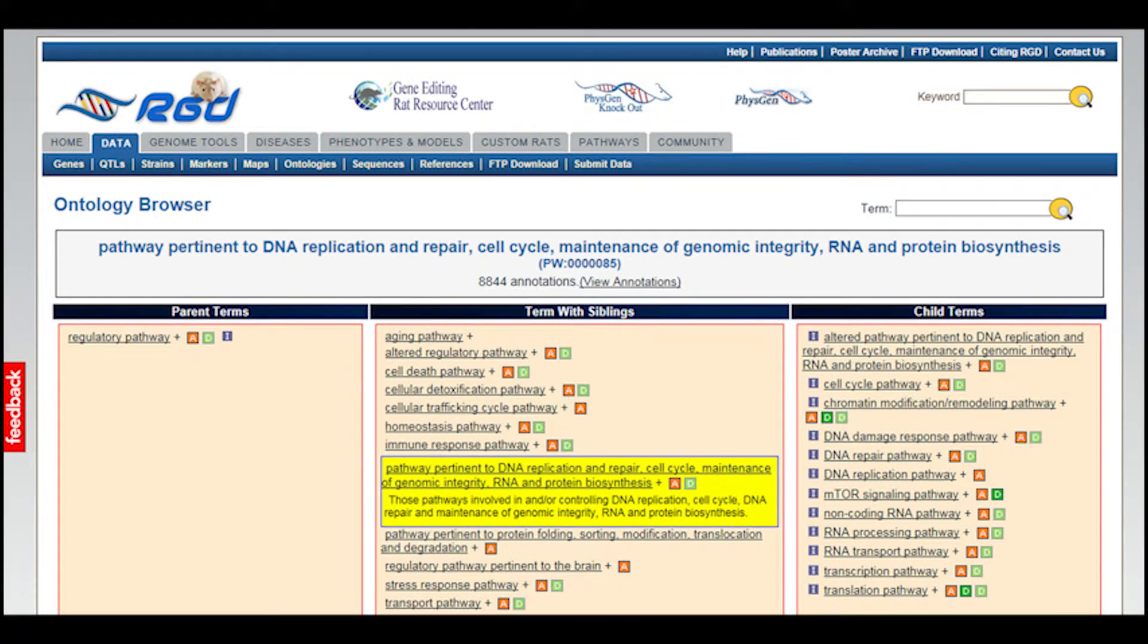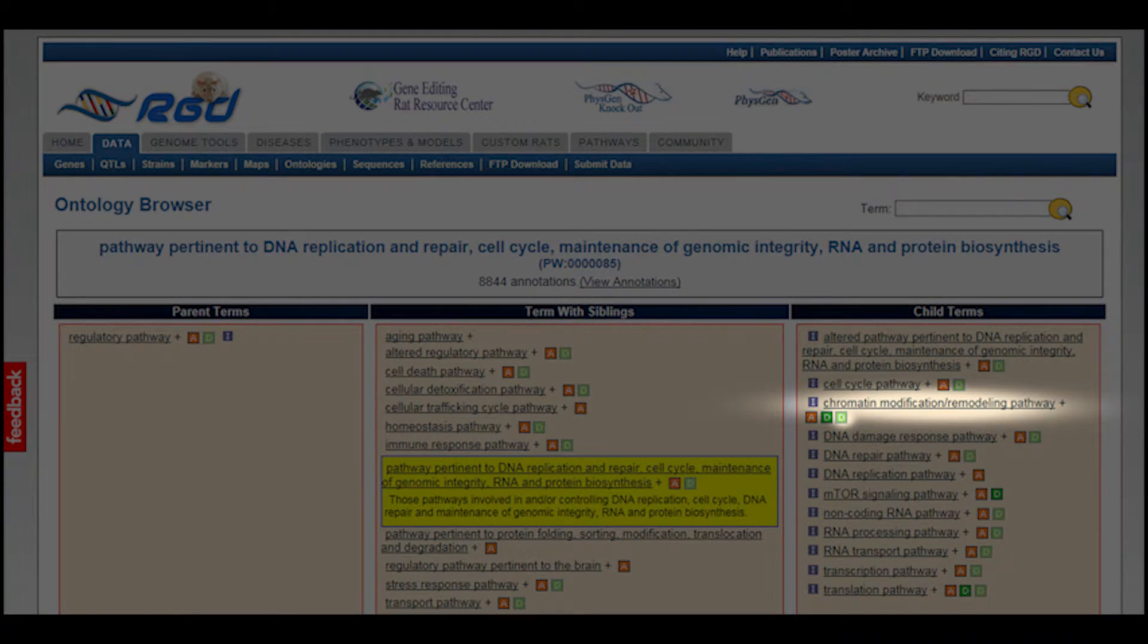The resulting child term chromatin modification remodeling pathway will appear with both a light and a dark color D next to it, meaning that there are diagrams for both that pathway and a child term. Click on that term.